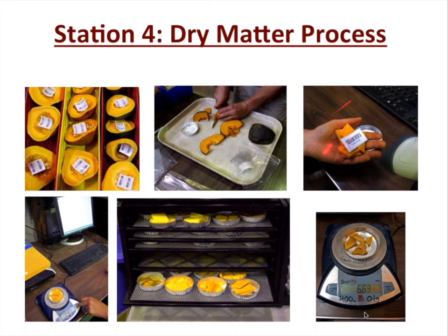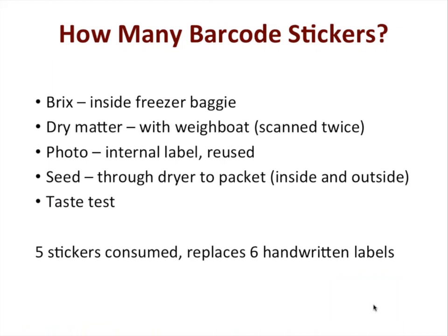For the scales: we use a 400-gram scale with 0.01-gram resolution for dry matter. For larger fruit and weighing whole squash, we use a 6,000-gram capacity scale with 0.1-gram resolution. For dry matter, something with higher resolution is critical. That's the complete process — we've used a lot of barcode stickers. For each squash, we use five stickers: one for the Brix sample, one for dry matter (scanned in twice — once when it comes in, once when it comes out), one in the photograph, one that goes with the seed packets into the dryer, and one sticker on the outside so we can sort through samples quickly.